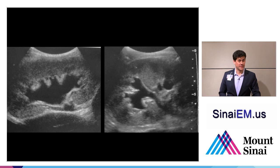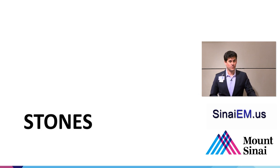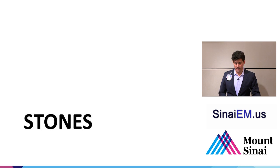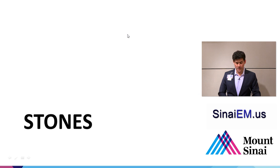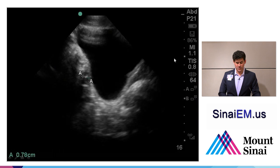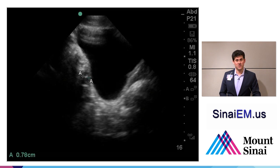Stones can sometimes be seen on ultrasound. One of the more common areas where a stone gets caught is at the UVJ, or ureterovesicular junction. In this sagittal orientation, with superior toward the patient's head, we see a stone measuring almost 8 millimeters — hyperechoic and shadowing slightly — right at that location. In this patient it was associated with hydronephrosis on the right side, very consistent with a diagnosis of renal colic. The ureters themselves are very difficult to see on ultrasound.